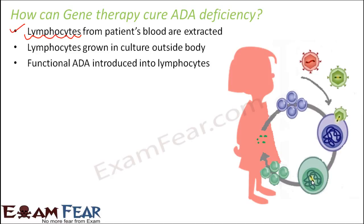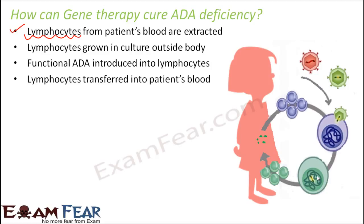Using recombinant DNA technology, functional ADA is introduced into the lymphocytes using a vector. These lymphocytes are then transferred back into the patient's blood. Now inside the patient's body, the lymphocytes carry the gene which is responsible for the production of the ADA enzyme.